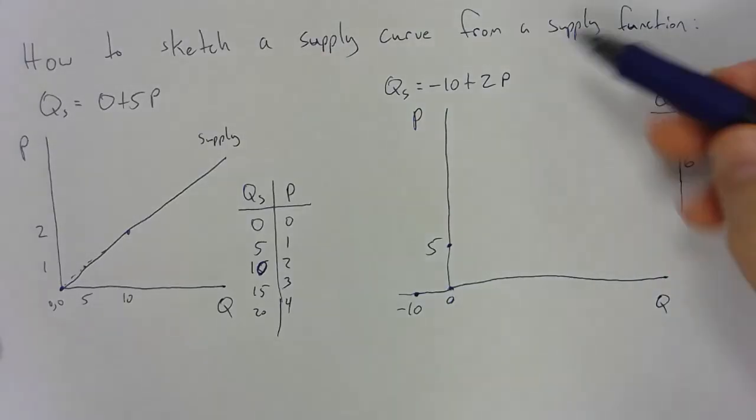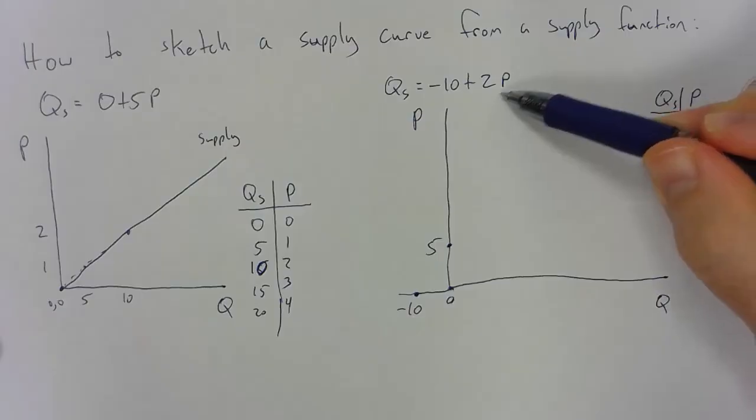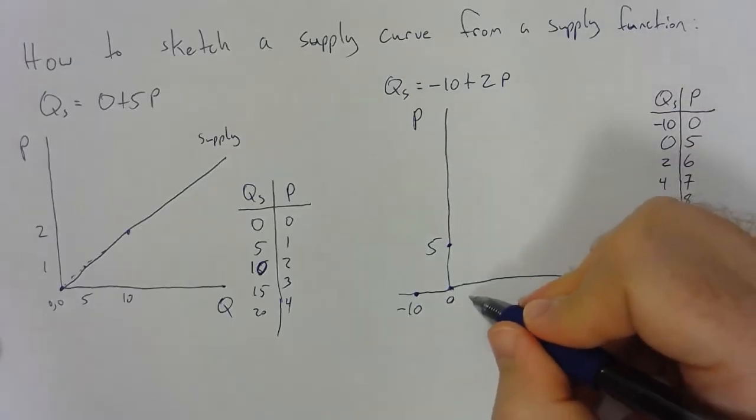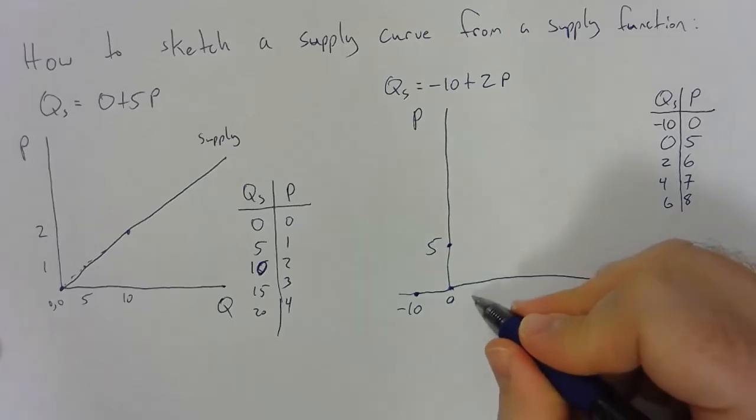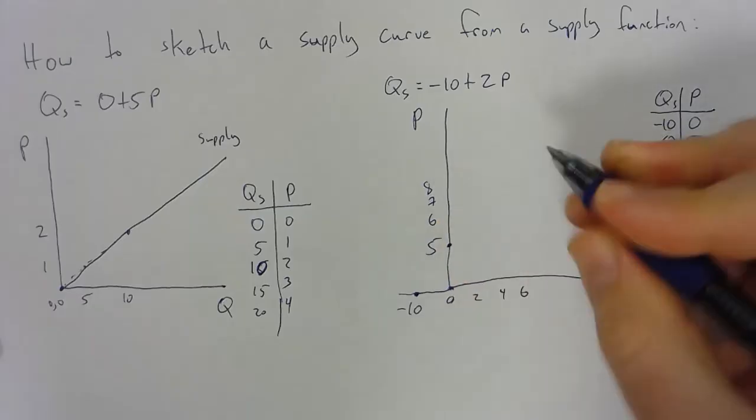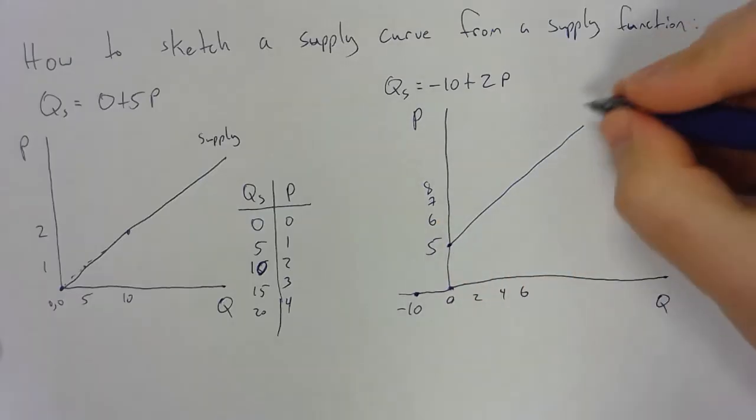If price is six, we plug it into our function. Six times two is twelve. Quantity ends up being two. If price is seven, we get four. If price is eight, we get six, so on and so forth. So we get two, four, six, and then our typical upward sloping supply curve.